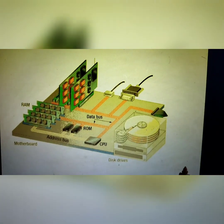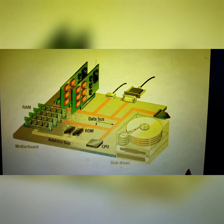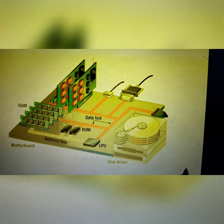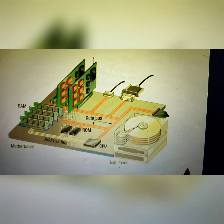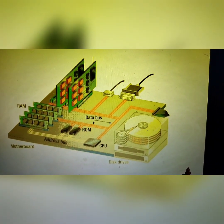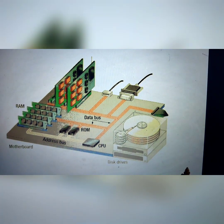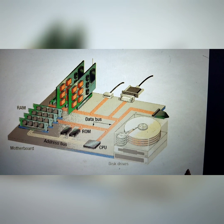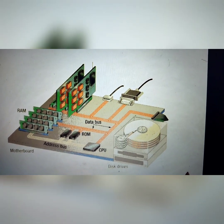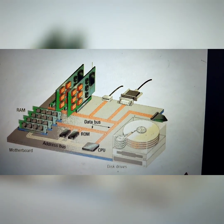Now see the structure of internal memory. So it includes RAM, ROM, data bus, CPU, address bus, motherboard, and disk drive. See the picture properly, Student Class 4.